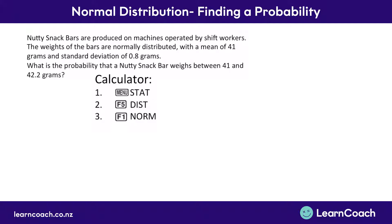NORM means normal distribution and statistics — that's what it means. Once you're in this menu you're going to have three options. Now if you're finding a probability like we are in this video, you're going to press NCD, which is the button F1 on your calculator.